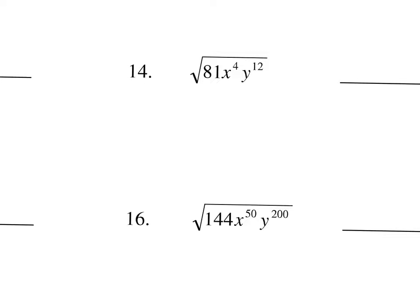The square root of 81 is 9, because 9 times 9 makes 81. Then for these exponents, you're going to divide by 2. So x squared — 4 divided by 2 — y to the 6th; 12 divided by 2 is 6.